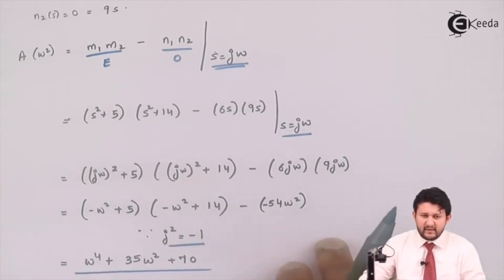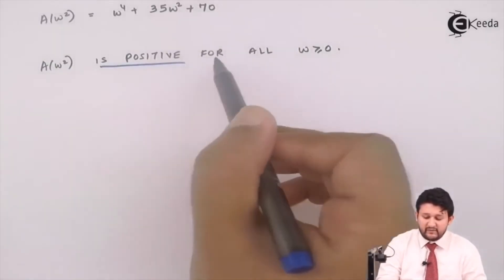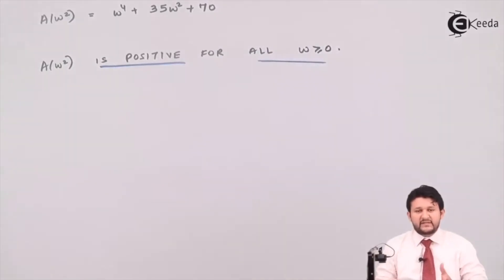So how to prove step number 3? For step number 3, A of omega squared is positive for all values of omega greater than or equal to zero. That's the condition for step 3. After getting all the satisfied conditions from step 1, step 2, and step 3, you can state it as PRF.